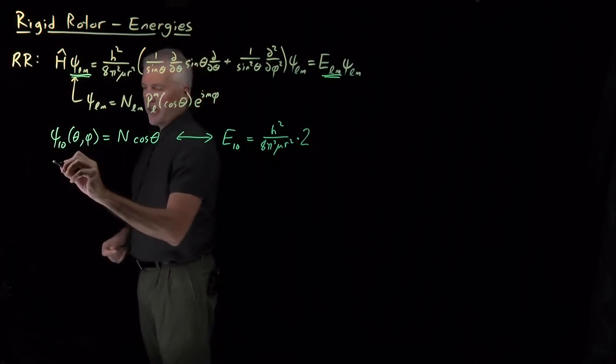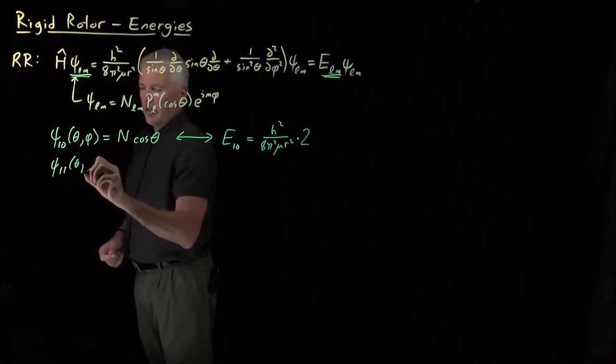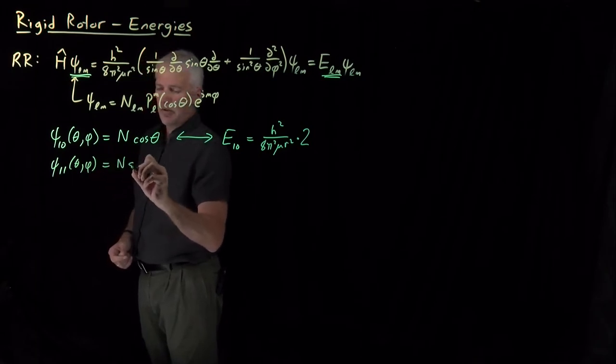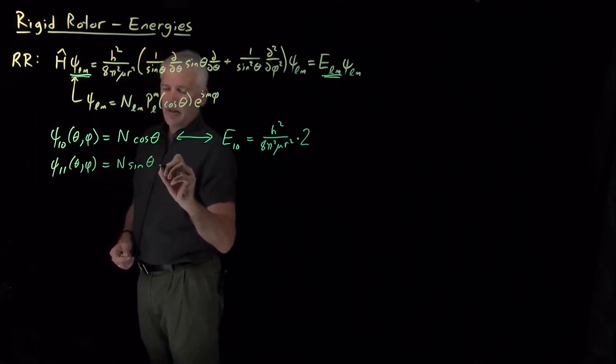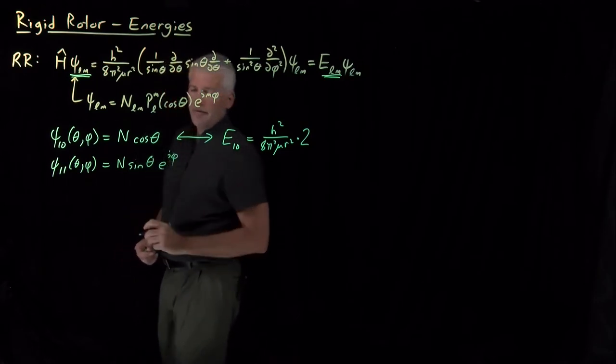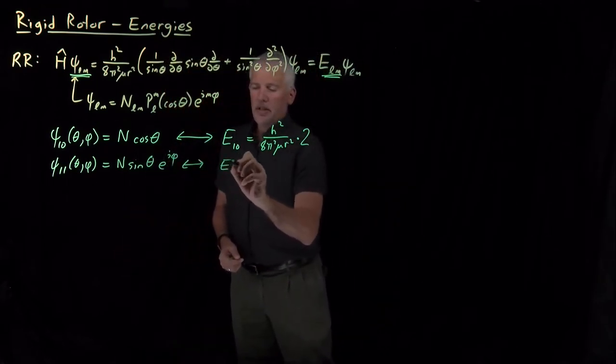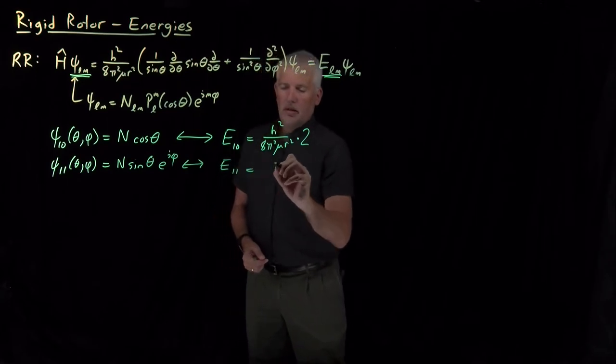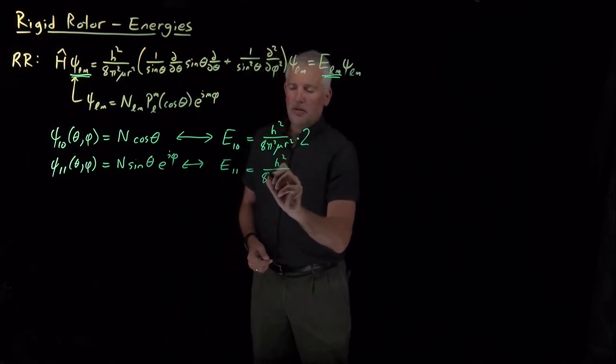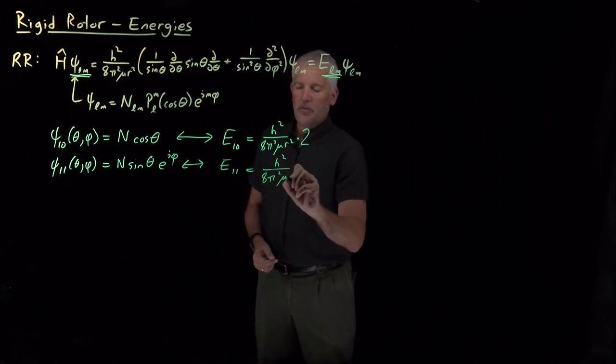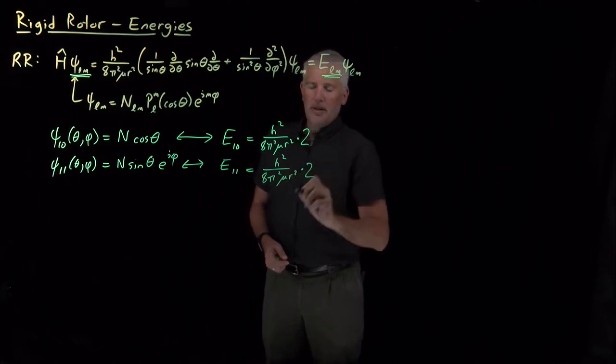We can also write down the psi 1,1 wave function, which looked like sine theta rather than cosine theta, and an e to the i phi, and then that wave function has the energy, also the same collection of constants, h squared over 8 pi squared mu r squared, multiplied by the same number 2.